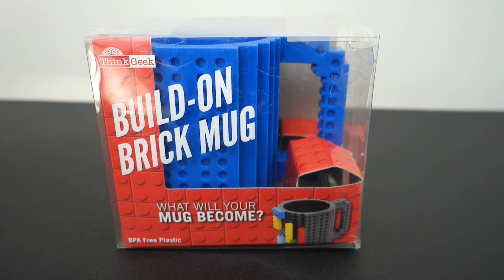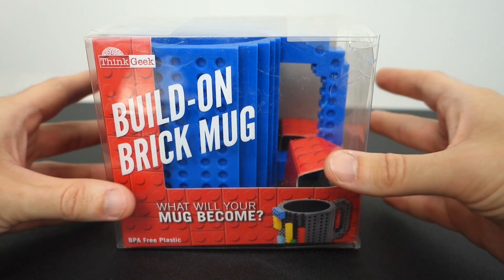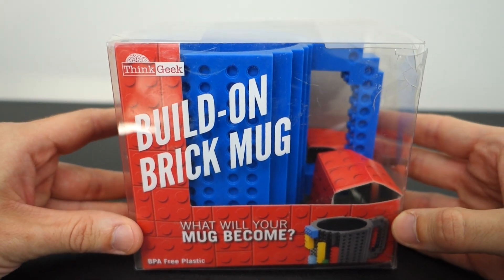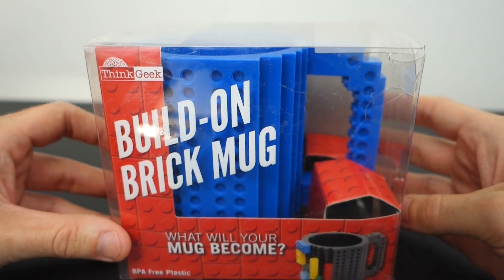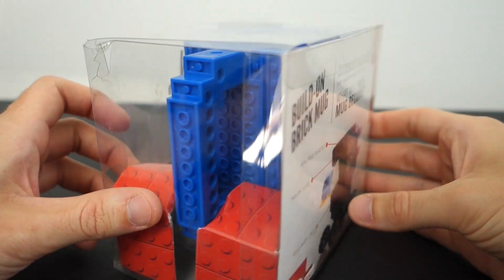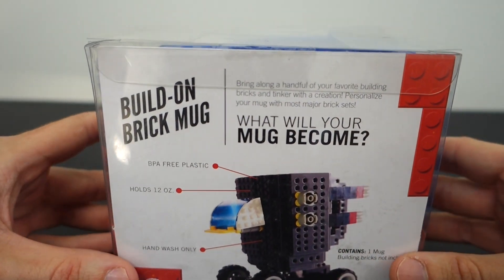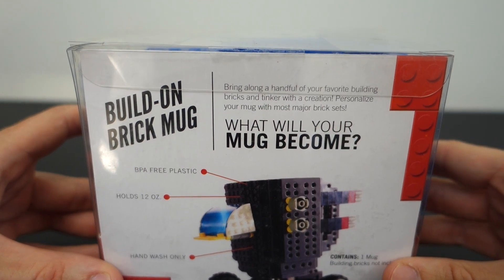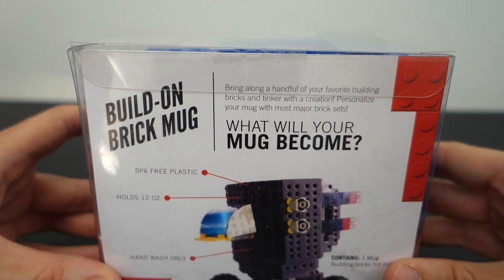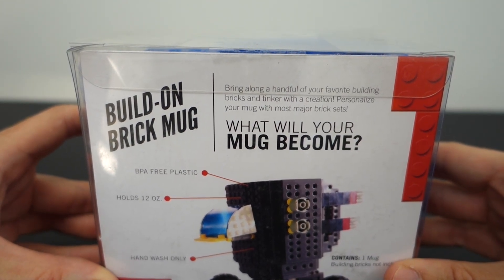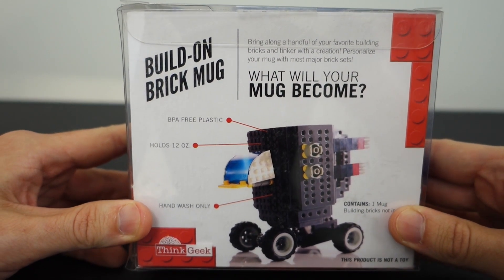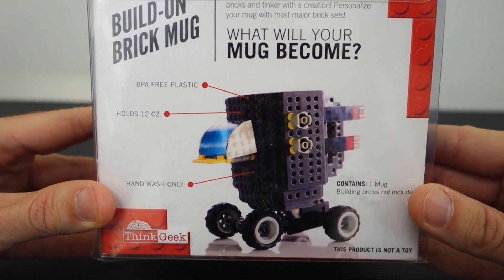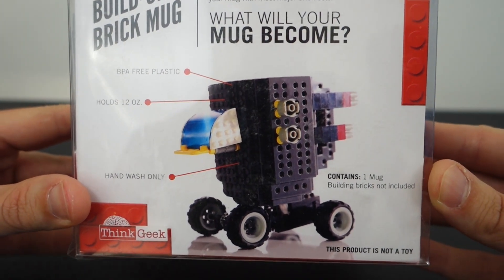So the first question is what the heck is this thing? It's just what it seems. It's a coffee mug, but it's made of plastic and it's got studs on the side that you can actually attach Lego pieces on. As you can see down here, it says what will your mug become? And if I flip this around, there's a good look at the side of it, and we'll be unboxing this thing. It says build on brick mug, bring along a handful of your favorite building bricks and tinker with a creation. Personalize your mug with most major brick sets. It's BPA free plastic, holds 12 ounces, hand wash only, which is a bummer, and contains one mug, building bricks not included.